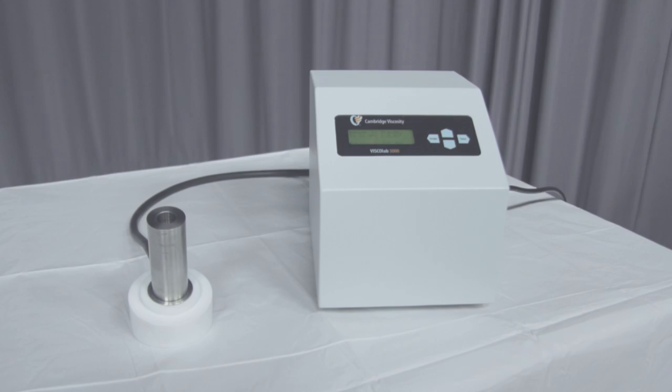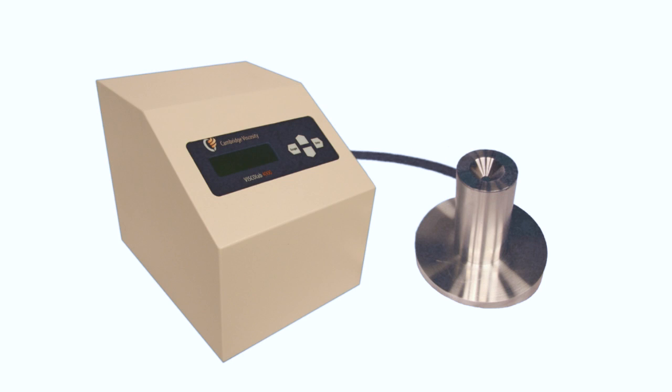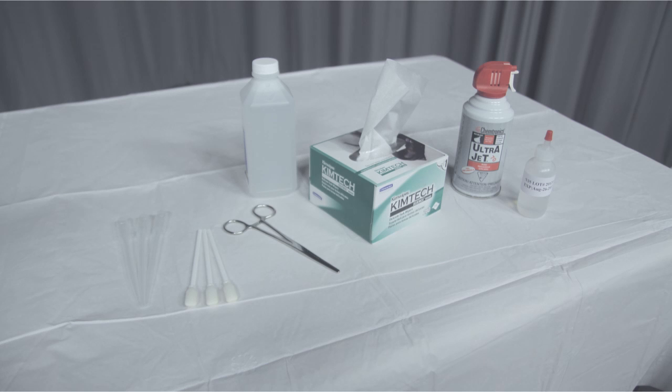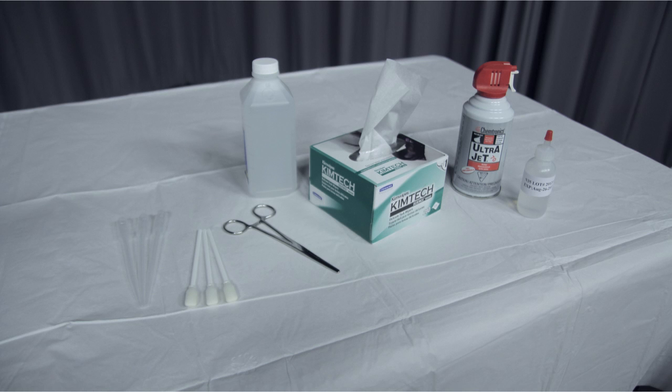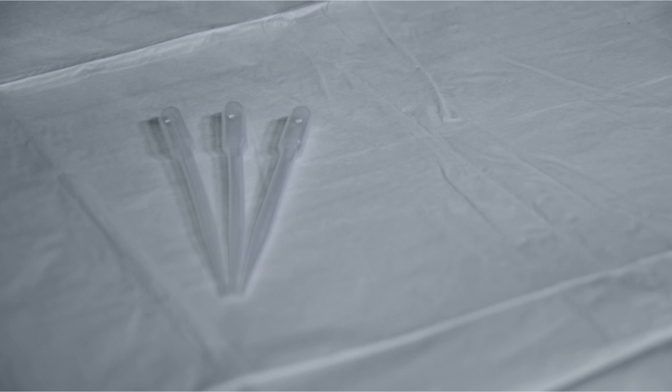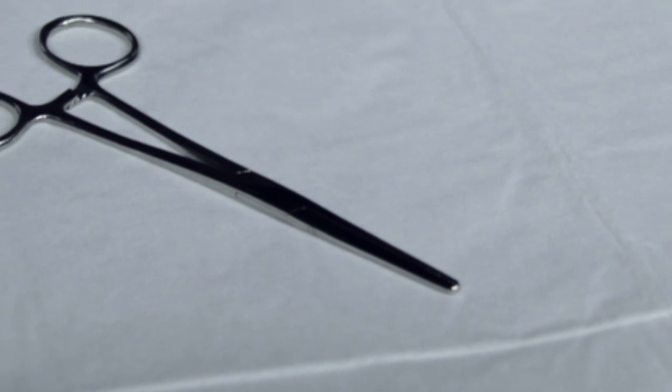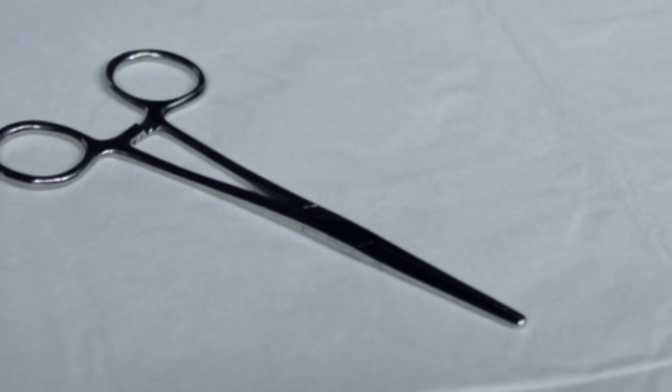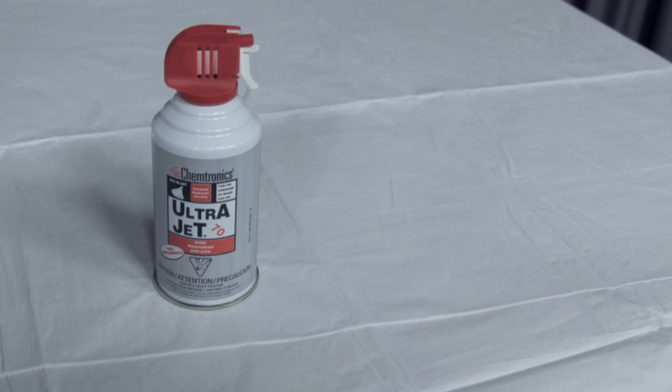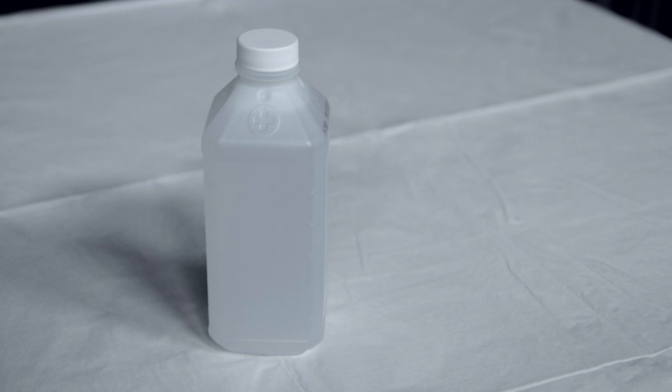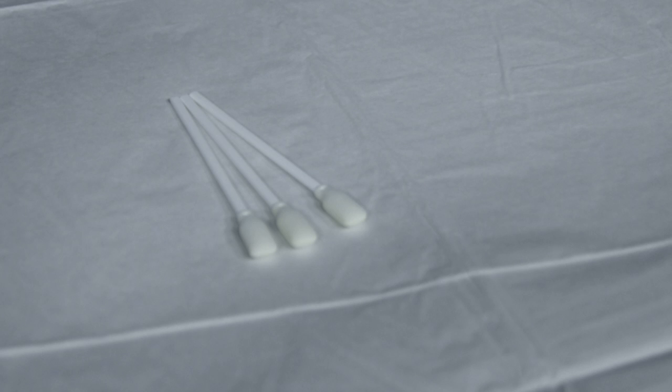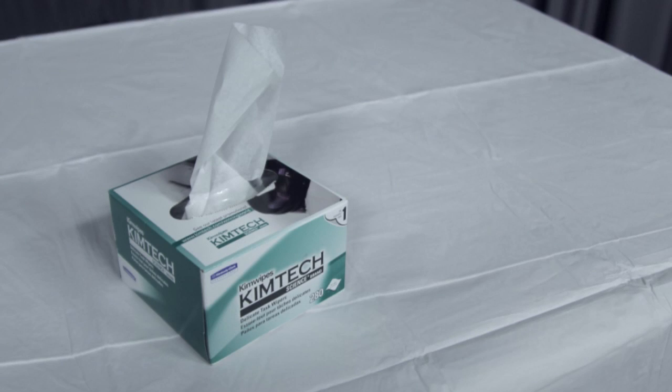You will need the following supplies to test the sample: sample, pipette, the forceps provided in the accessory kit. Please avoid needle nose pliers that gouge the stainless steel surface of the measurement chamber, a charged canister of clean gas for blowing the sensor out, a solvent. In this video we are using isopropanol alcohol, foam tipped swabs, and lint free tissues.